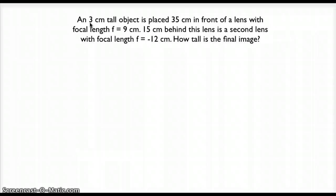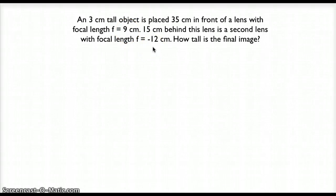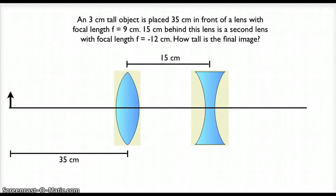First, I want to start with a diagram. The first lens, because it has a positive focal length, is a converging lens. The second lens, because of the negative focal length, is a diverging lens.